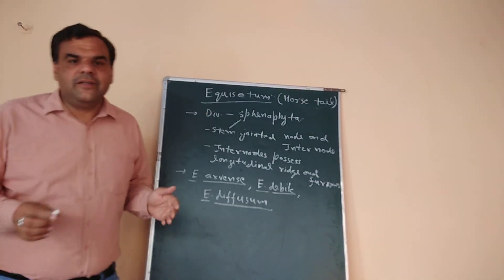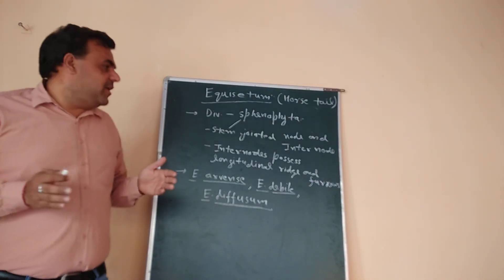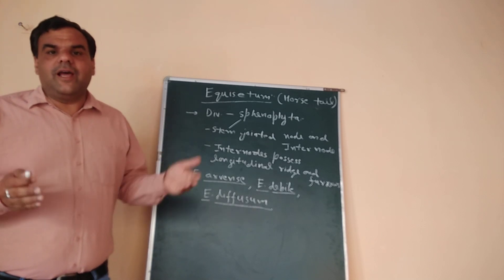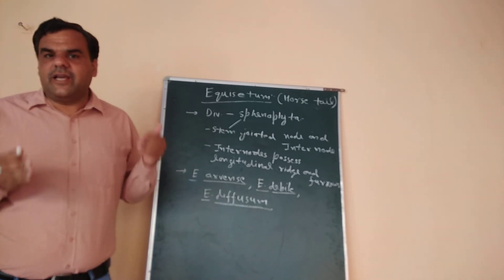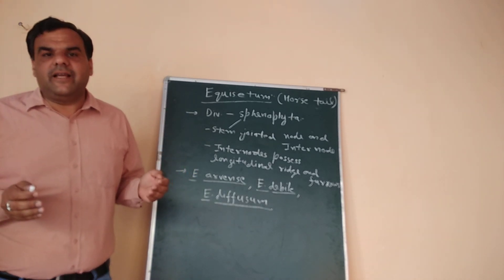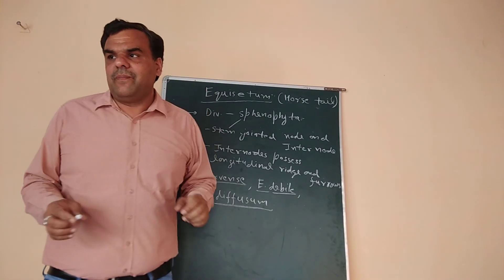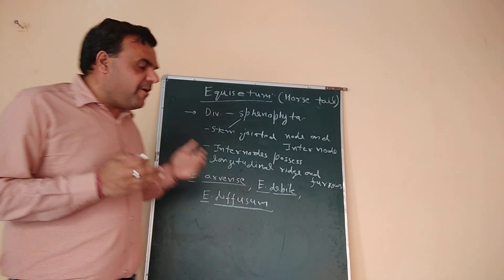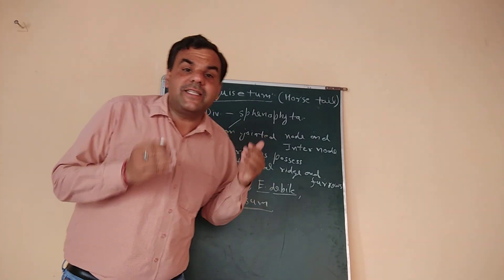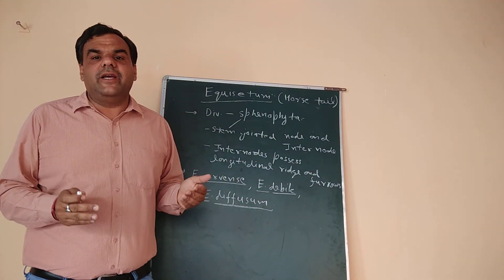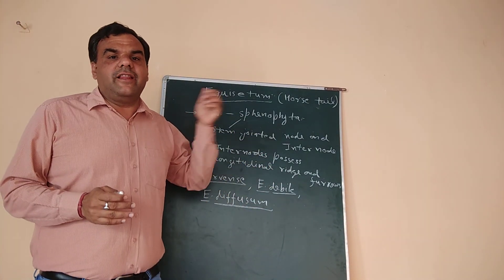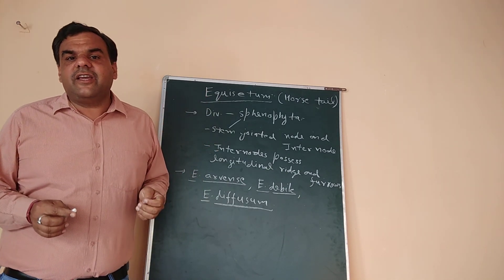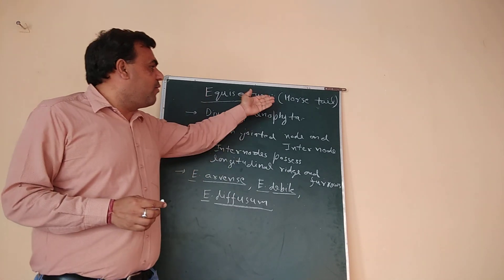Dear students, in college we have completed a series of deadlines. Now we are going to be on the board. We are going to start with Equisetum. Equisetum is a trade of ferns. This is the first paper in your second unit. The trade of ferns is Equisetum. Equisetum is also known as the horsetail.